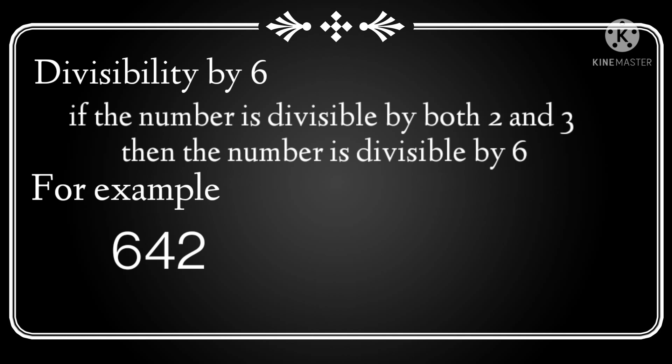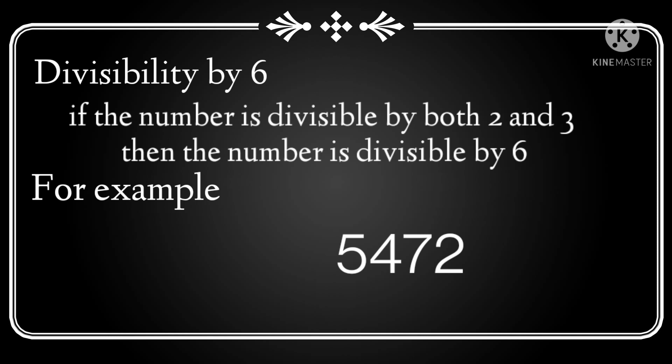One more example: 5,472. This number is even, so it is divisible by 2. Let's add its digits — 5 plus 4 plus 7 plus 2 — the sum equals 18. And 18 is divisible by 3. Hence, the number is divisible by 3 also. So we can say that 5,472 is divisible by both 2 and 3, and therefore the number is divisible by 6.